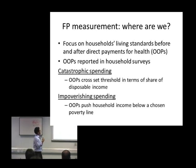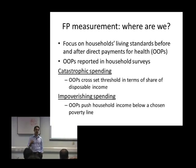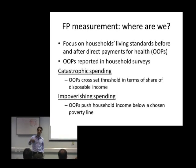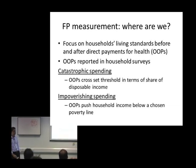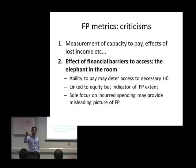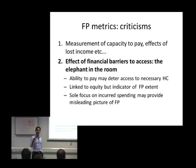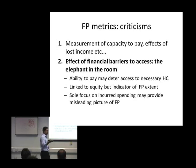These two metrics — catastrophic spending and impoverishing spending incidence — have very important limitations for providing a more rounded assessment of financial protection levels. The problems include measuring the true capacity to pay of households for healthcare, the fact that these measures don't take into account the loss of earnings due to illness, and they don't take into account coping strategies by households, such as selling assets or borrowing money to pay for health. What I'm going to focus on here is another very important criticism.